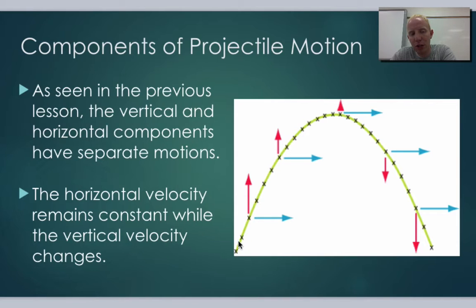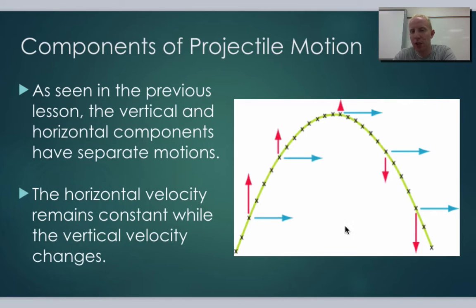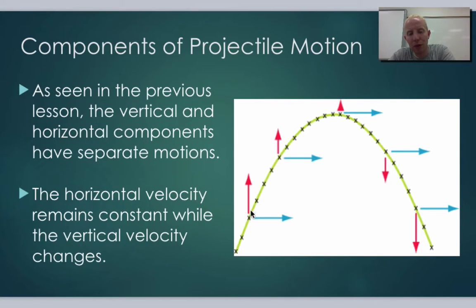For example, if we have a projectile shooting up into the air, we can trace its vertical and horizontal components. Notice that the horizontal velocity stays the same throughout the entire motion — it's just moving at constant velocity in that direction. However, the vertical component goes up and its velocity keeps accelerating downward because of gravity. That's what gives it that parabolic shape.